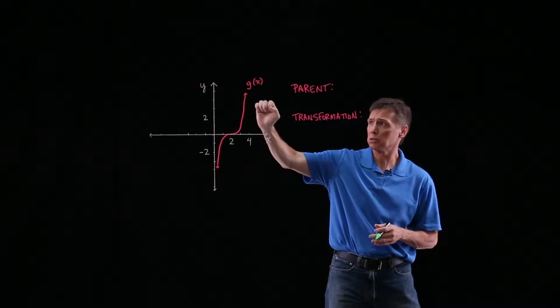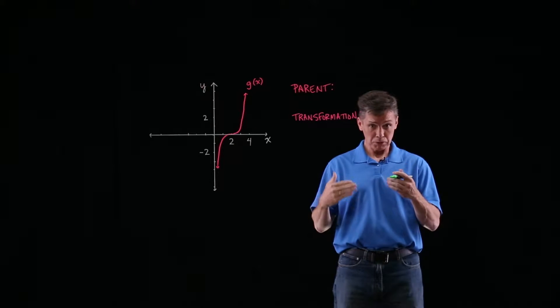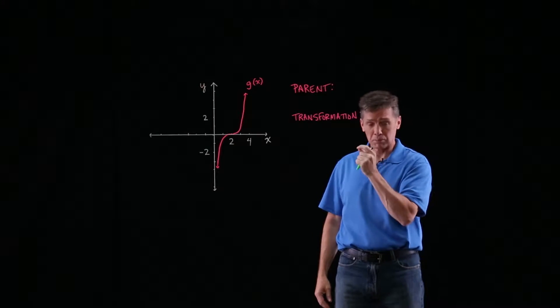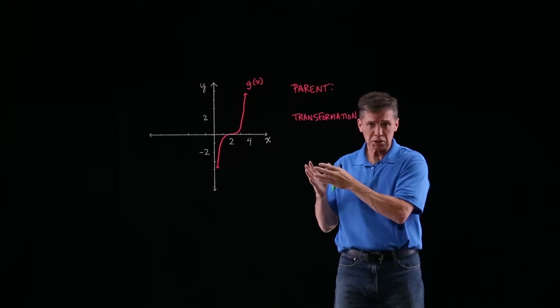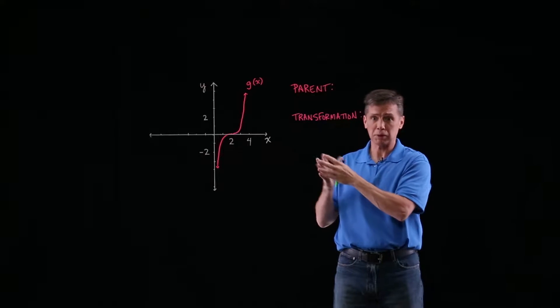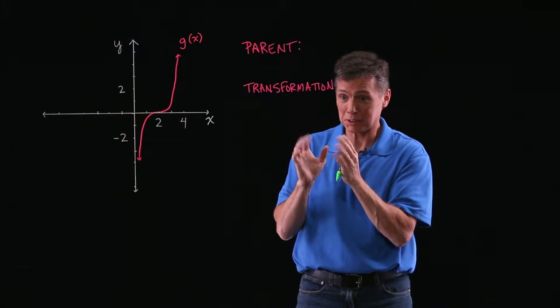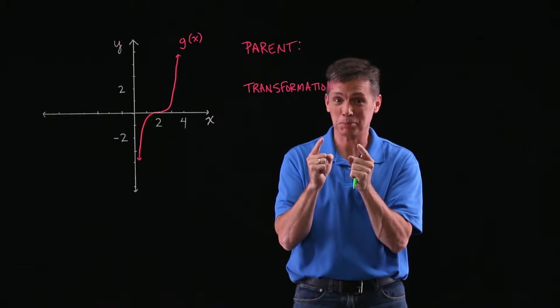I threw a name on it just so we can refer to it as g of x. But from this graph, what we're supposed to do is identify its parent and also the transformation that would have been used, and then also to write the function that they've given us algebraically. OK, so I've got to make sure I make this clear. This is such an important skill. OK, so really practice these problems.